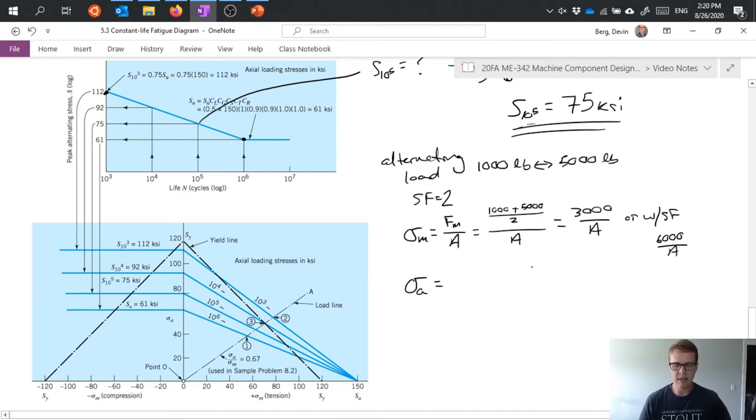Our alternating stress is basically what is our peak past that mean. So if our mean is 3000 then our peak is 5000 that means our alternating load is 2000 because it's the difference between those two or with a safety factor I get 4000 over A.